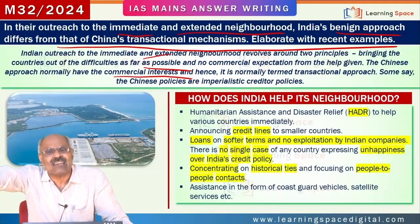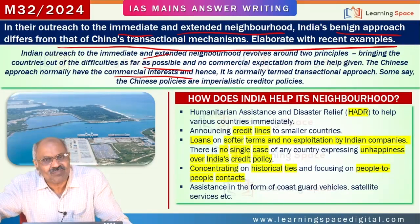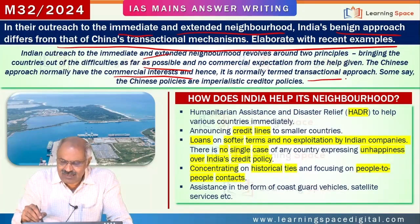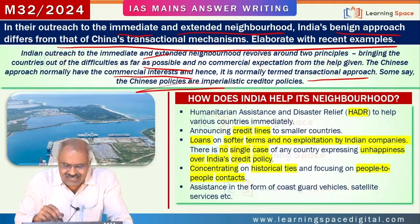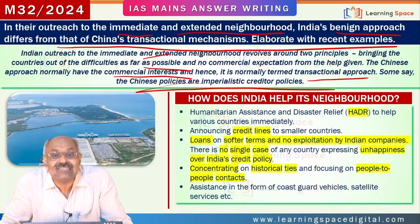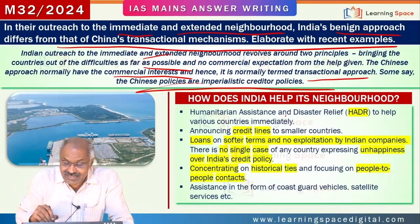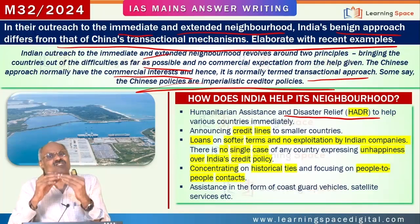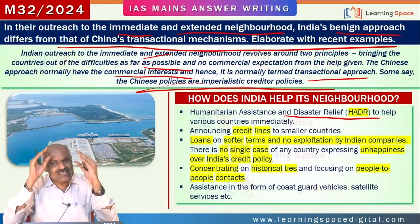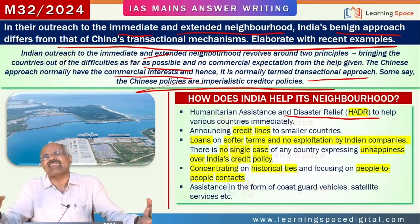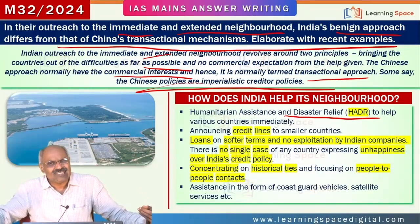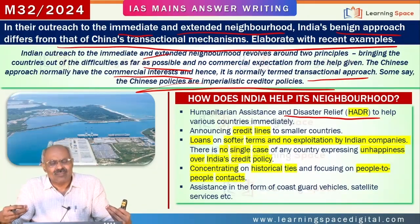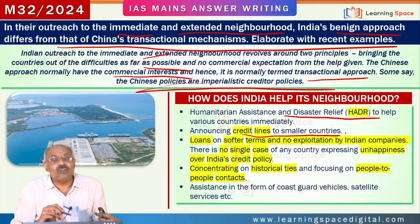There is a lot of difference. The Chinese approach is normally called a transactional approach; some say Chinese policies are imperialistic creditor policies. India's approach is humanitarian assistance and disaster relief. India conducts regular HADR exercises in the Indian Ocean region. It helps many countries in crisis in case of cyclones. In times of water crisis, India sent water to Maldives, announcing credit lines to smaller countries.